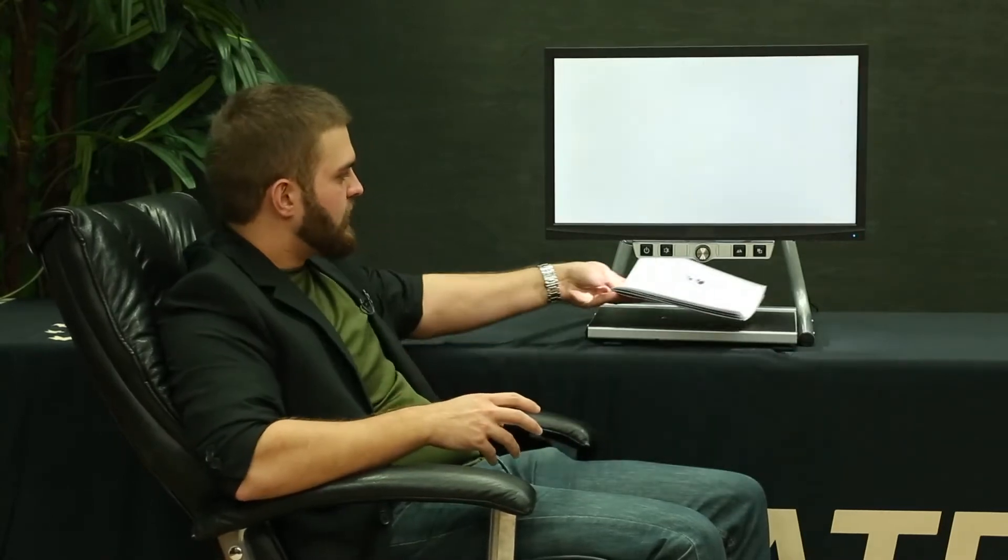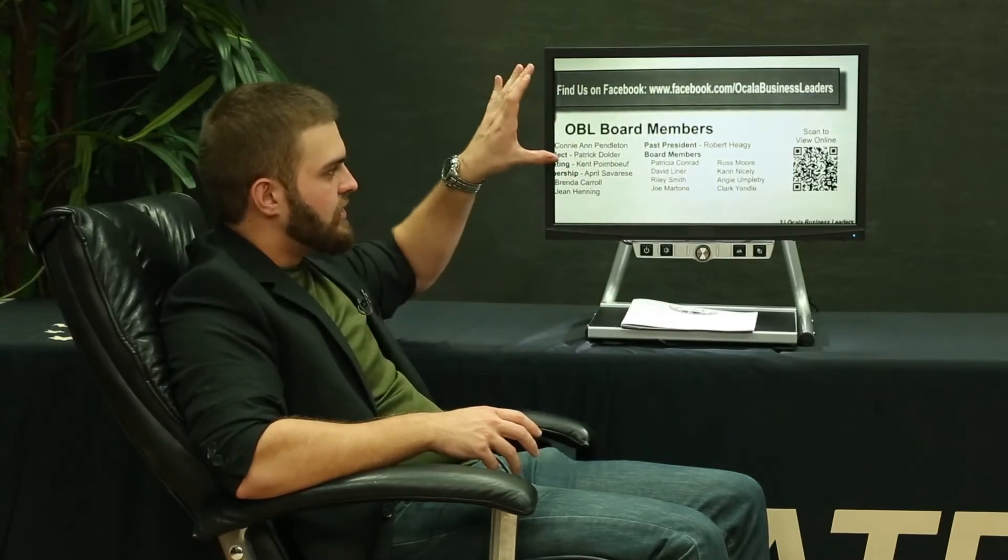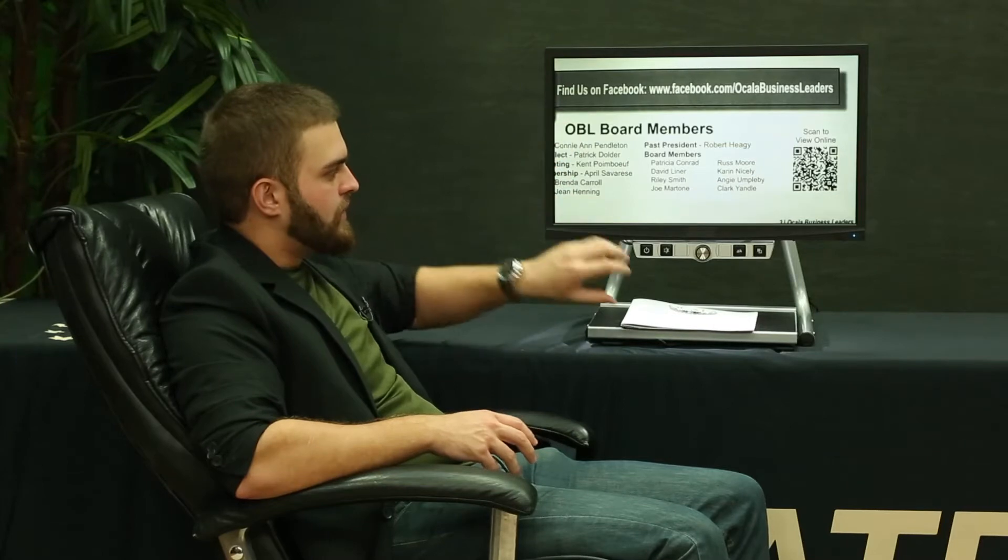The way it works is when you place documents underneath on the tray, you're going to be able to see the image magnified on the screen up above. There's a dial along the middle that you can zoom in or out with.